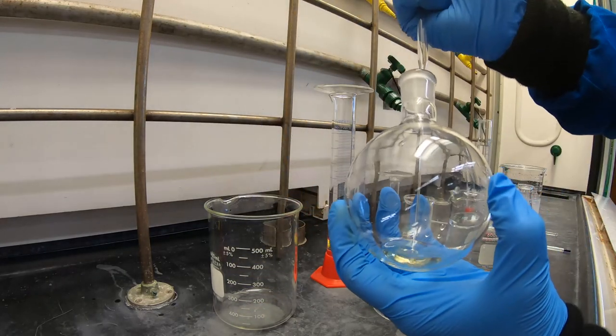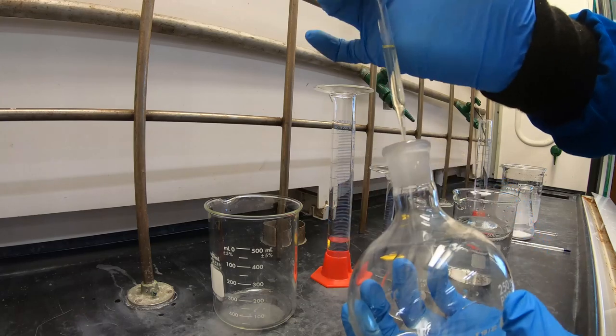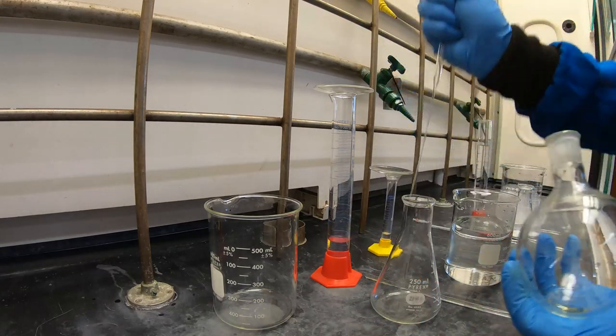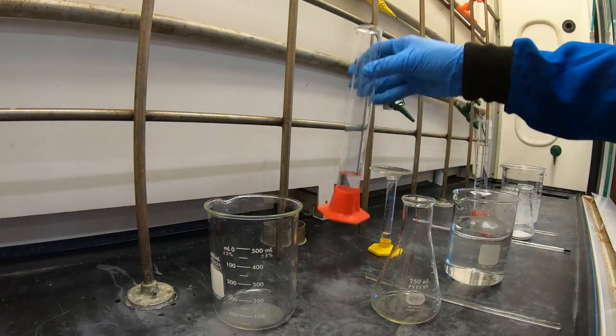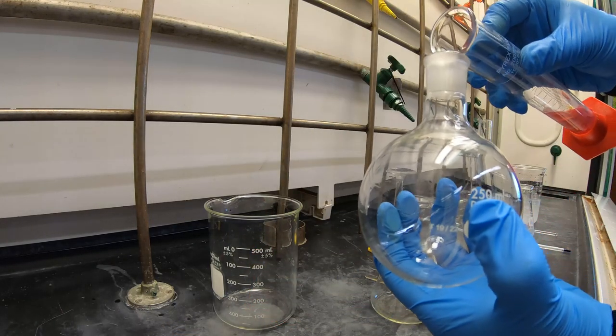Transfer your 2,6 dimethyl aniline to your 250 mL Erlenmeyer flask using a pipette. Then add 25 mL of your glacial acetic acid using a portion to rinse your round bottom flask.